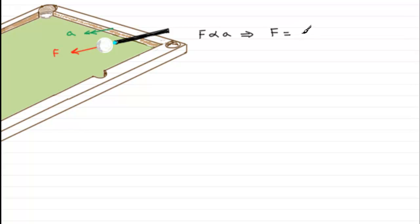And that constant turned out to be the mass of the particle M. So F equals MA. And this particular equation is known as Newton's second law.